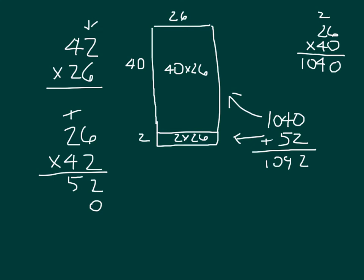So I'm working with 26 times this 4, but that 4 is worth 40. That's why I placed the 0. 4 times 6 is 24, regroup a 2. 4 times 2 is 8, plus 2 is 10. And then I can go ahead and add those together. 1,092.